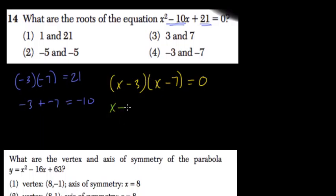So if x minus 3 equals 0, the first term here, solve for x and x equals 3. That's your first root. If x minus 7 equals 0, solve for x and x equals 7, that's your second root.